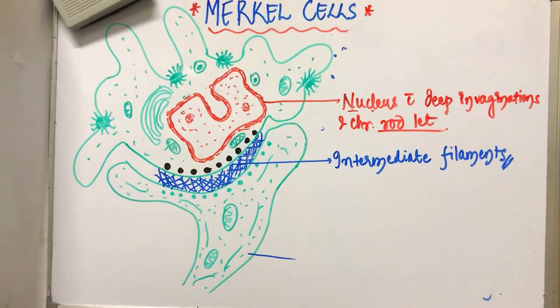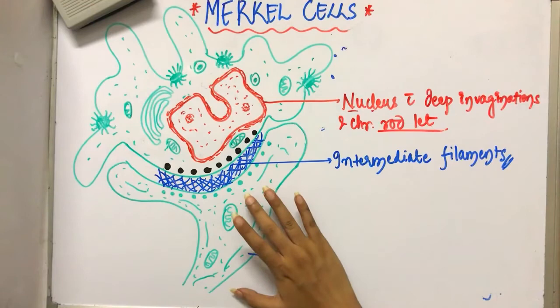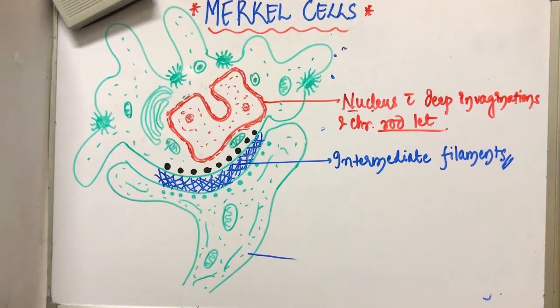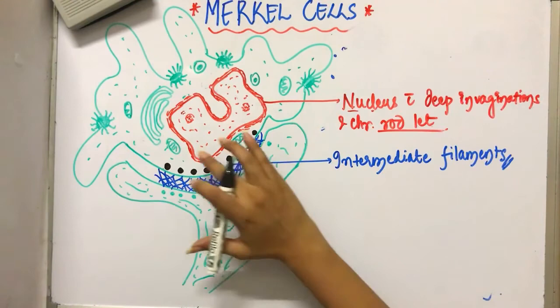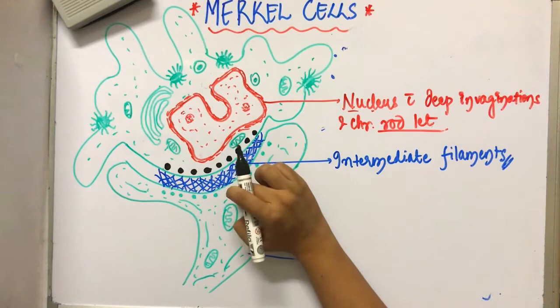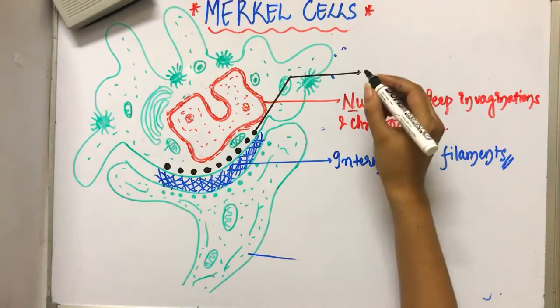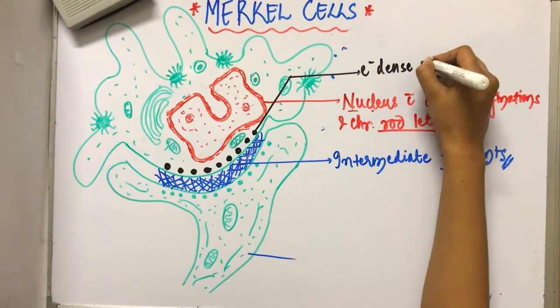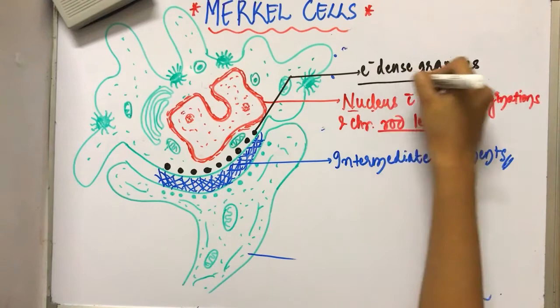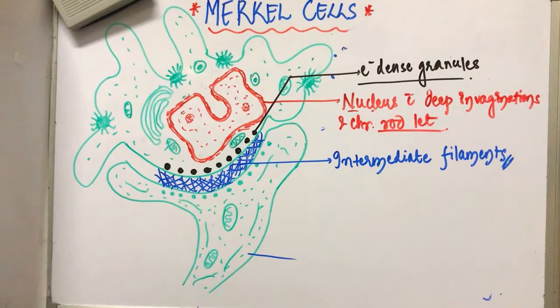They contain intermediate filaments at the junction, which is the sensory neuron axon terminal. They also contain electron dense granules at the site of the cytoplasm in contact with the axon terminal, which is present at the synaptic junction.